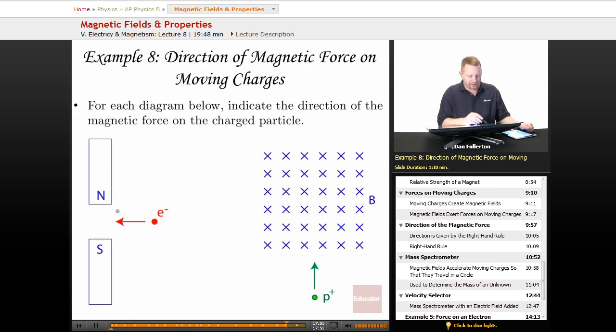The first thing we need to do over here on the left is realize that the magnetic field runs from north to south outside the magnet. So our magnetic field is going to look like it has that direction.